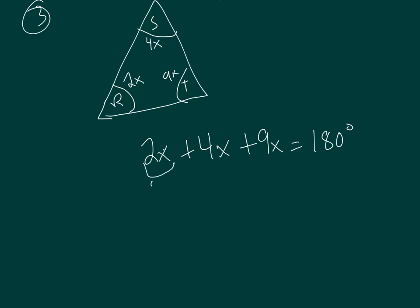Adding up all of my x's, they can all go in the same train car because they're all like terms. So I've got 2x plus 4x makes 6x plus 9x makes 15x. And that's equal to 180. Draw my little mirror. I've got to divide by 15 on this side and divide by 15 on the other side.